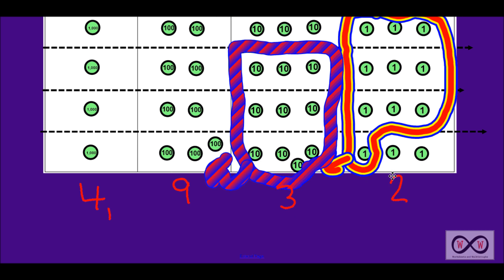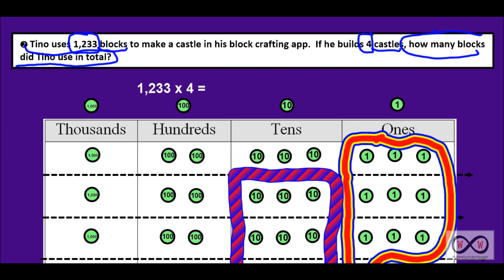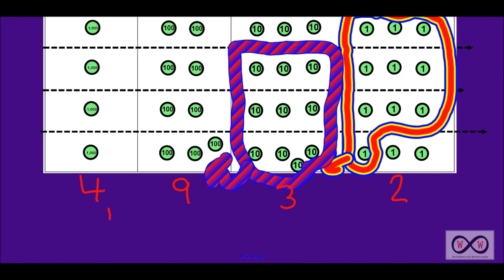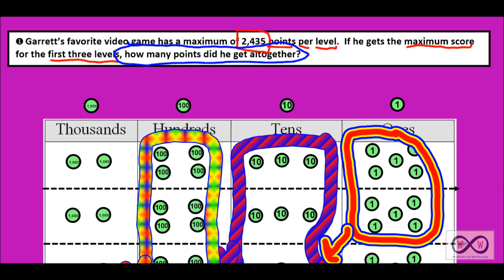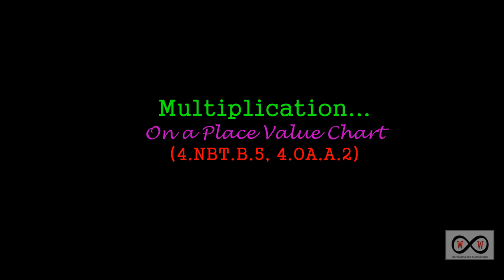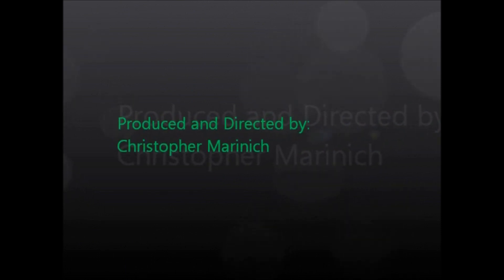We'll look up at our math job: how many blocks did Tino use in total to make his four castles in his block crafting app? We can see that Tino used a total of 4,932 blocks to make four castles. And that was a quick look at multiplying a four-digit number by a single-digit number on a place value chart. Thanks for checking out worksheetsandwalkthroughs.com — we'll see you again next time. Bye.